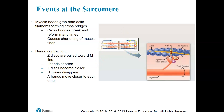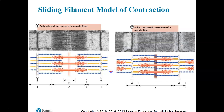The Z-discs are going to get moved towards the M-line. Our I-bands, the lighter bands of the striations, get shorter. The Z-discs move closer together. We completely get rid of the H-zones. And our A-bands move closer together. Overall, the length of our muscle shortens or contracts.